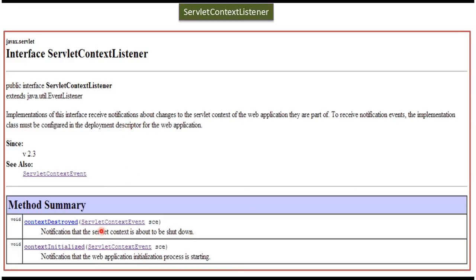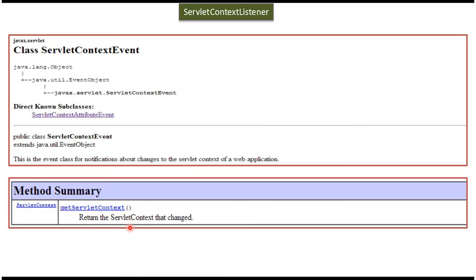Here you can see ServletContextEvent. This event will be generated when the context is initialized or destroyed. From that event we can get the ServletContext object using the getServletContext method, which returns the ServletContext that has been changed.